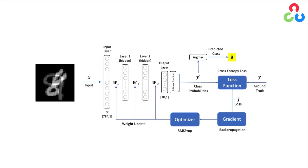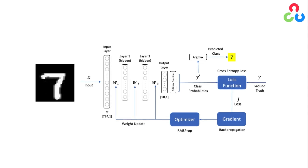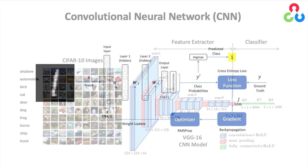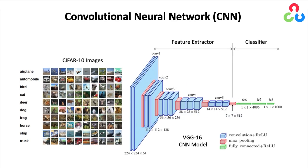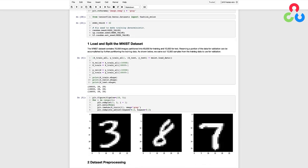MLPs are not the preferred way to process image data, but this serves as a good example to introduce several new concepts before moving on to covering more complex networks known as convolutional neural networks, or CNNs for short. So let's go ahead and dive in and get started.